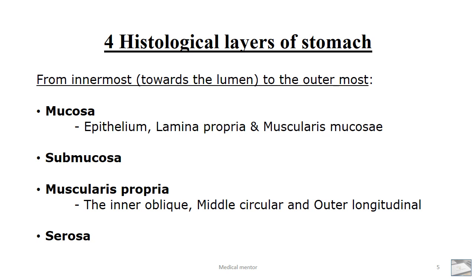The stomach is lined by tall columnar mucus-secreting epithelium. Then we have the lamina propria, which mainly has connective tissues, blood vessels, muscles, and lymphatics, and the muscularis mucosa. The muscularis mucosa has two layers: the inner circular and the outer longitudinal layer.